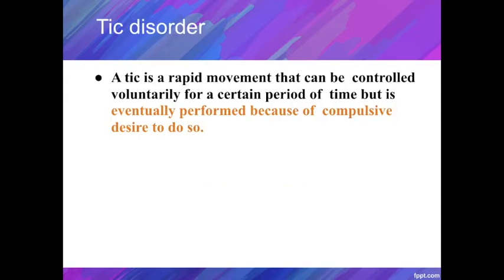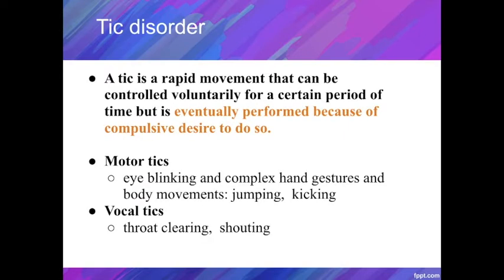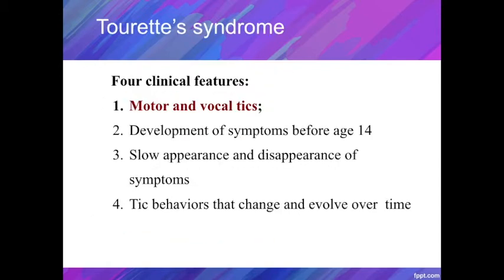A tic is a little different from the compulsory movements described previously. It is a rapid movement that can be controlled voluntarily for a certain period of time, but is eventually performed because of a compulsive desire to do so. There are motor and vocal tics. Examples of motor tics include eye blinking and complex hand gestures and body movements like jumping and kicking. Examples of vocal tics include throat clearing and shouting. Multiple motor and vocal tics are one of the four clinical features of Tourette's syndrome. Here is an example of a patient with Tourette's syndrome — you can see both motor and vocal tics when he was talking.